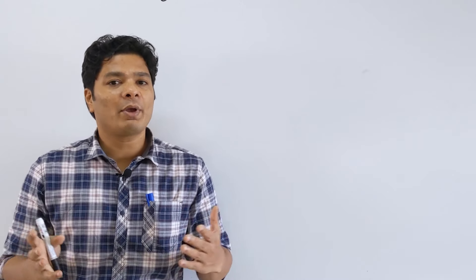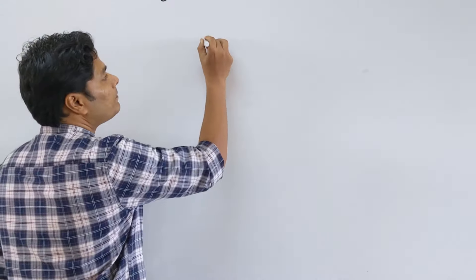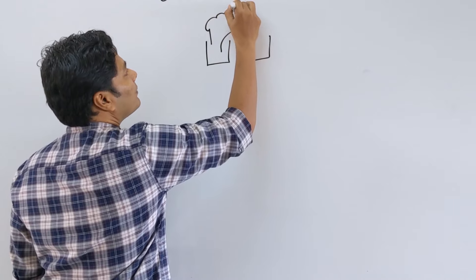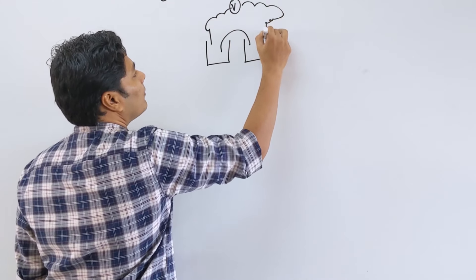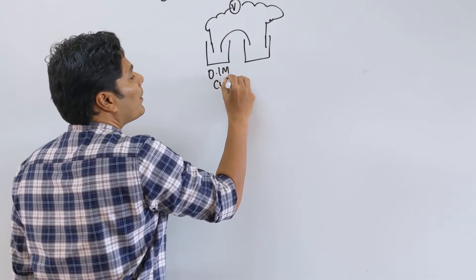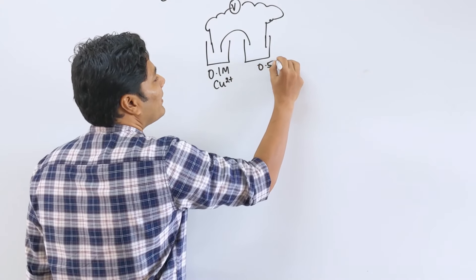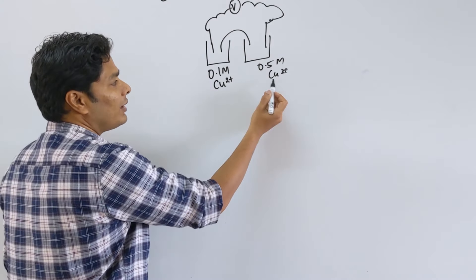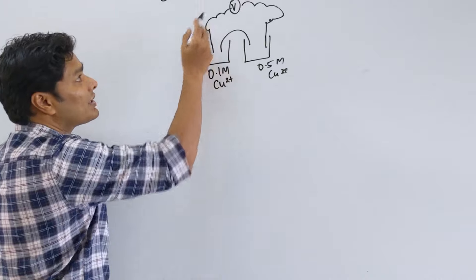You don't necessarily need to have different species for the cathode and anode — you can have the exact same species. If you have the exact same species at the exact same concentration, you have reached equilibrium and E_cell is 0. But what if we have the exact same species at different concentrations? For example, we can have two different cells connected through a salt bridge and a voltmeter. What if one beaker is 0.1 molar Cu²⁺ and the other is 0.5 molar Cu²⁺?